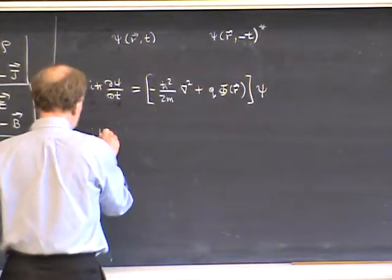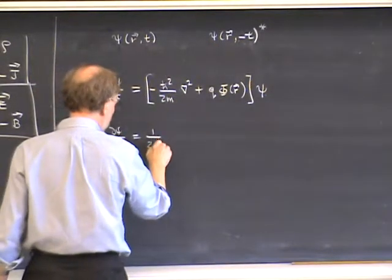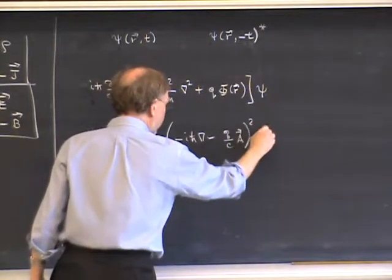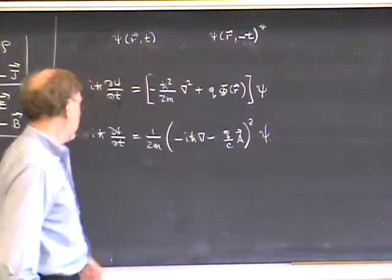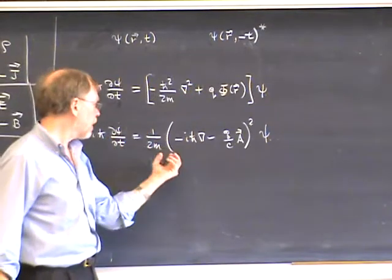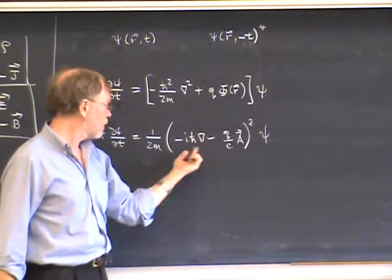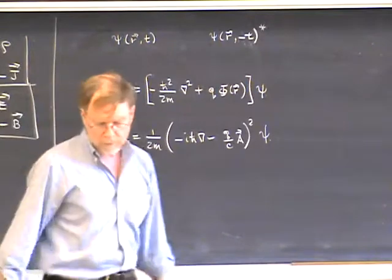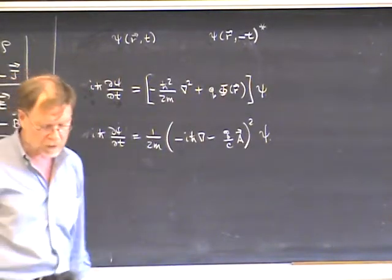Similarly, if we have a magnetic field, let's take the same definition of the time-reversed solution. The Schrödinger equation now involves the operator (−iħ∇ − q/c · A)² / 2m acting on ψ. Even with this definition of the time-reversed state, it does not satisfy the original Schrödinger equation. On taking complex conjugation, the −i∇ term turns into +i∇, but the q/c · A term doesn't change sign. These two terms suffer opposite sign changes, so the Hamiltonian operator does not map into itself. Just like in the classical case, there is no time-reversal invariance in the presence of magnetic fields.